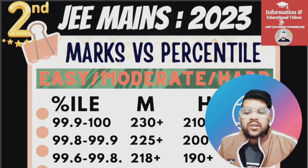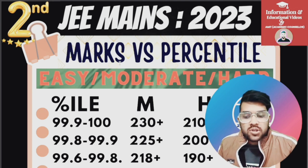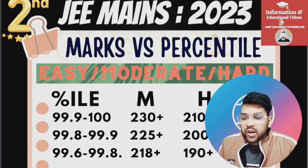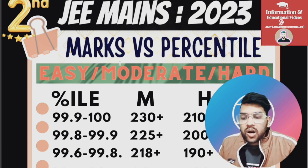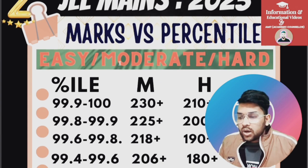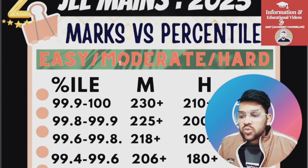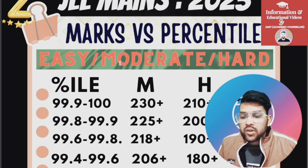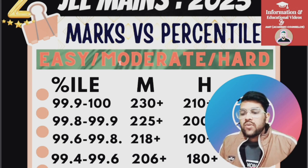For an easy paper in the 99.9 to 100 percentile range, 255 plus or even 260 is possible. For 99.8 to 99.9, it is 225 for moderate, 200 plus for hard, and 245 for easy. For 99.6 to 99.8, it is 218 for moderate, 190 plus for hard, and 225 plus for easy.